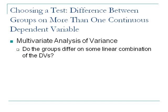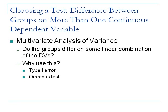Like ANOVA, MANOVA is a big omnibus test. A significant MANOVA tells you there is a difference between groups on this combination of variables. One reason to use it is to reduce Type I errors — with multiple DVs, you don't want to do a lot of t-tests or ANOVAs. Use MANOVA as an omnibus starting point, and if it's significant, look at each DV separately.